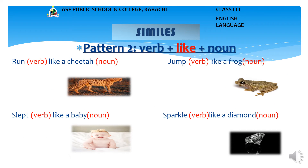Now we will learn the second pattern to form a simile. Pattern No. 2: Word + Like + Noun. Example No. 1: Runs like a cheetah. In this phrase, 'run' is a verb — action words in a sentence that describe what the subject is doing — and cheetah is a noun. This simile uses the word 'like' and compares runs and cheetah. Example No. 2: Slept like a baby. Slept is the past form of sleep and baby is a noun. This simile uses the word 'like' and compares slept and baby.